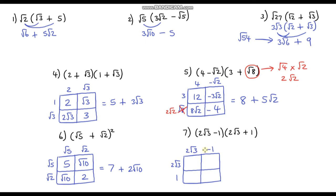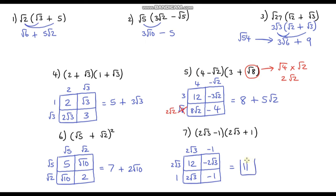The last question: 2√3 times 2√3 — 2 times 2 is 4, and √3 times √3 is 3, so that's 12. Then 2√3 times 1 is 2√3. Negative 1 times 2√3 is negative 2√3. And 1 times negative 1 is negative 1. Simplifying: 12 minus 1 is 11, and 2√3 minus 2√3 cancels. So the final answer is just 11.